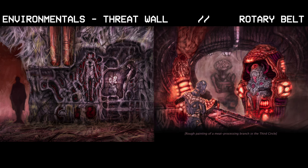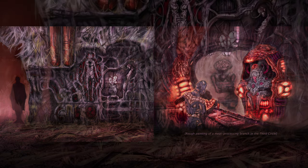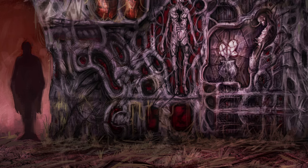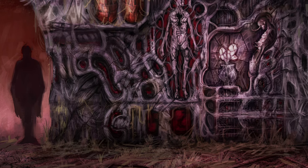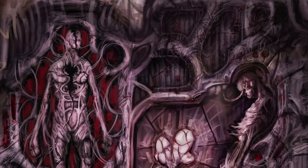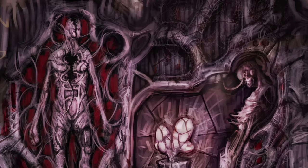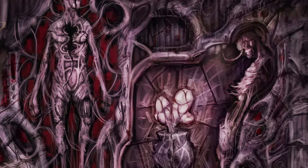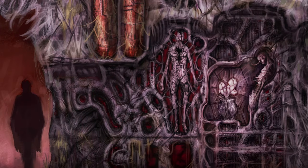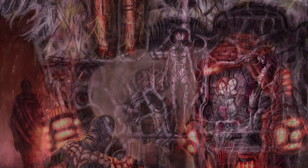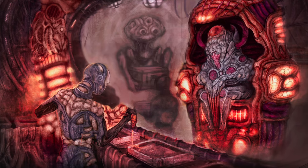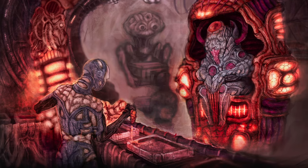Throughout the factory there are walls created from dead Morda assets who were deemed unworthy of resurrection. They serve as a reminder to Morda assets: if you don't do your work or if you act up too many times — even without your knowledge — there's no way back. And this next piece is a rough painting of a meat processing branch of the third circle.